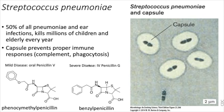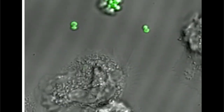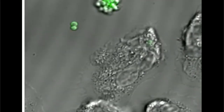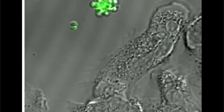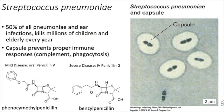Gram-positive bacteria stain deep purple under a Gram stain. They have a thick layer of peptidoglycan — a structure made of peptides (proteins) and glycan (sugars) bound together, providing dense scaffolding that protects the cell and maintains its shape. It sits on top of the cell membrane, and you can embed proteins in the peptidoglycan layer as well.